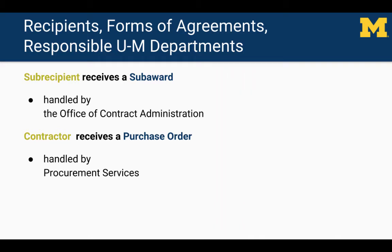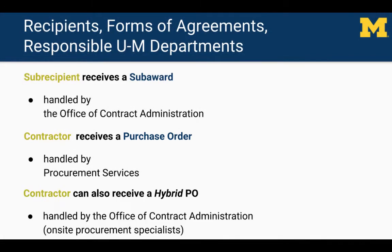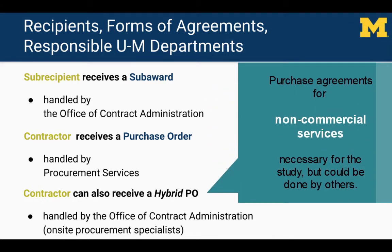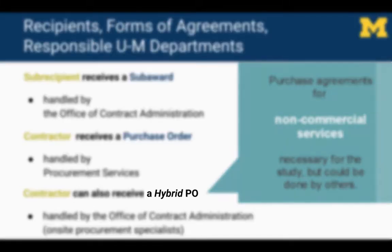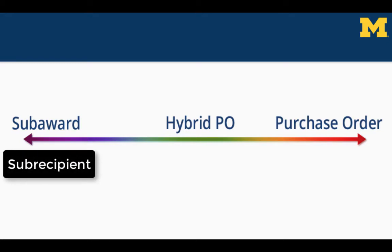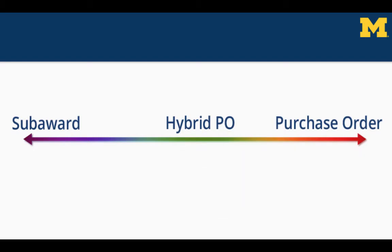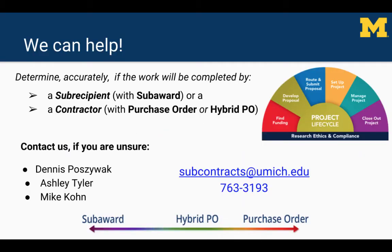For this presentation, we refer to these agreements collectively as purchase orders. A contractor may also be an organization that receives payment for providing non-commercial research services that are necessary for the study. The form of agreement is a hybrid contract, written and negotiated by procurement specialists on site in the Office of Contract Administration. Generally speaking, a party to an agreement that does not meet the definition of a subrecipient is considered a contractor by the federal government.